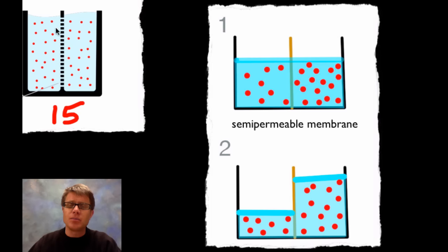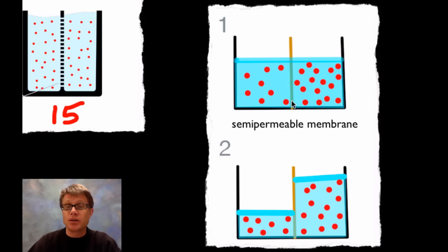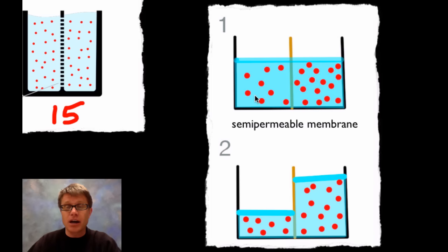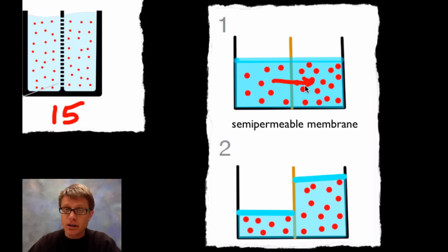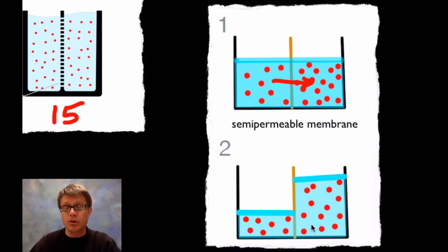Osmosis is a specific type of diffusion — it's the movement of only water across a semi-permeable membrane. Using the same setup but with a semi-permeable membrane that only allows water through, one side is hypertonic — more solute, less water — and the other is hypotonic. After 15 minutes, the water level rises on the hypertonic side because water flows from high water concentration to low water concentration. The sugar molecules can't move through that membrane, so this is osmosis.